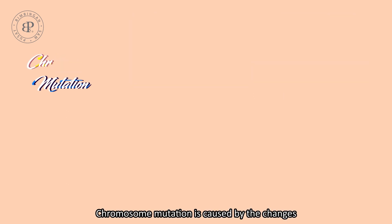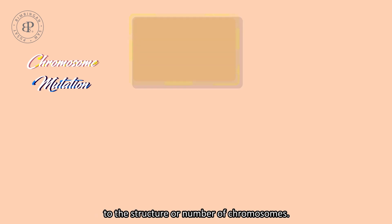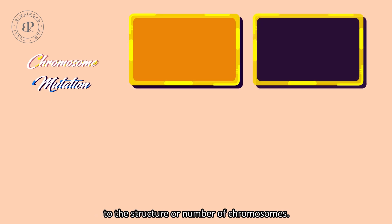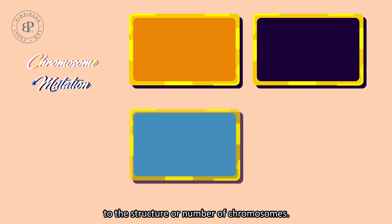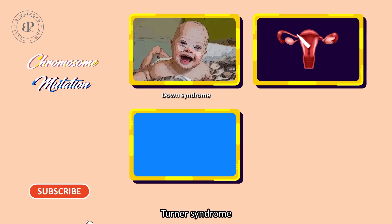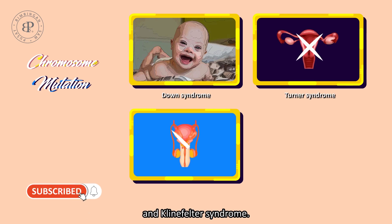Chromosome mutation is caused by changes to the structure or number of chromosomes. These changes also cause diseases such as Down syndrome, Turner syndrome, and Klinefelter syndrome.